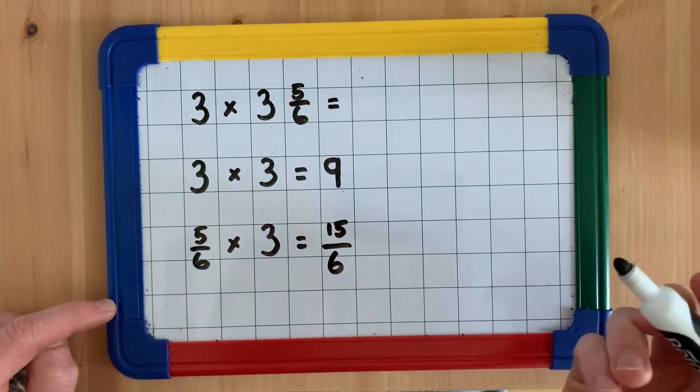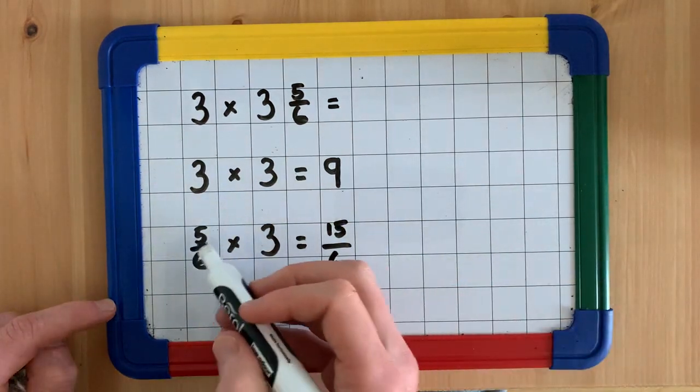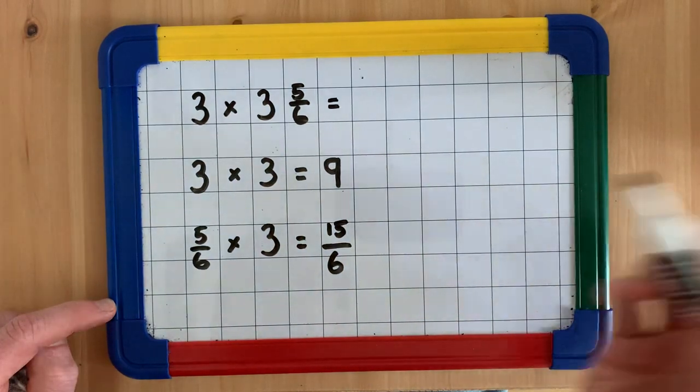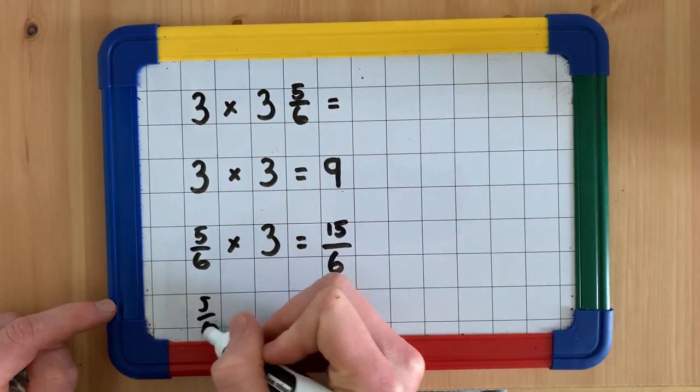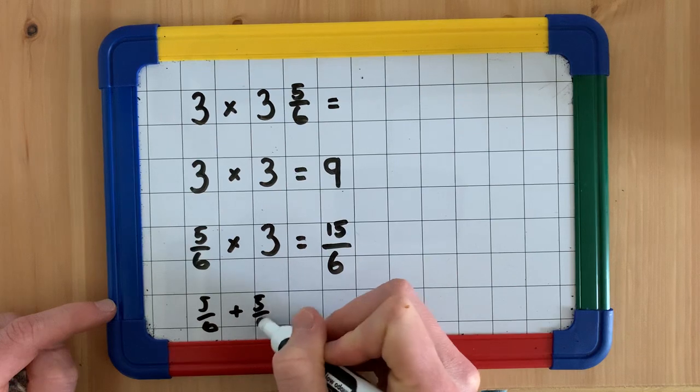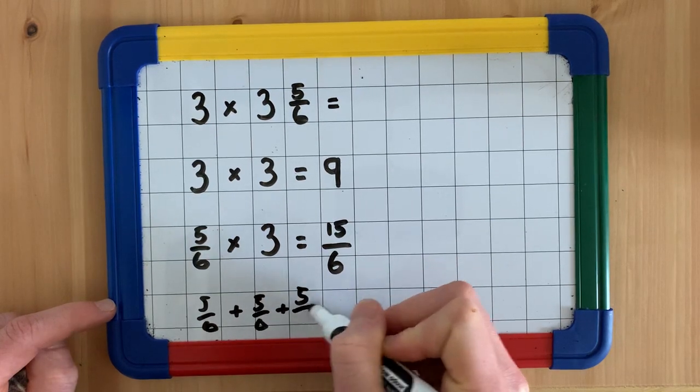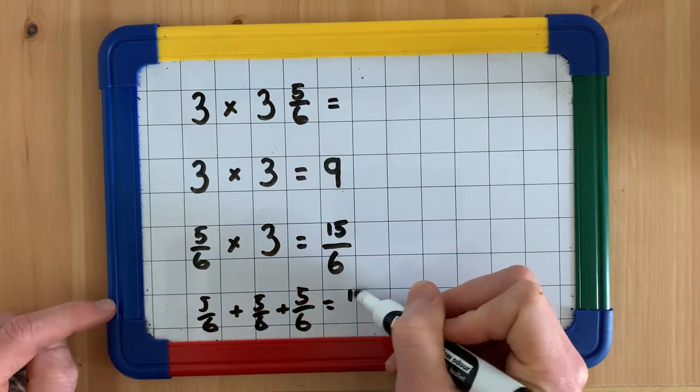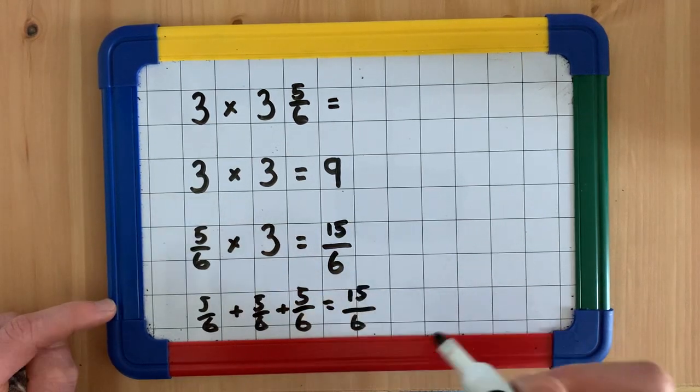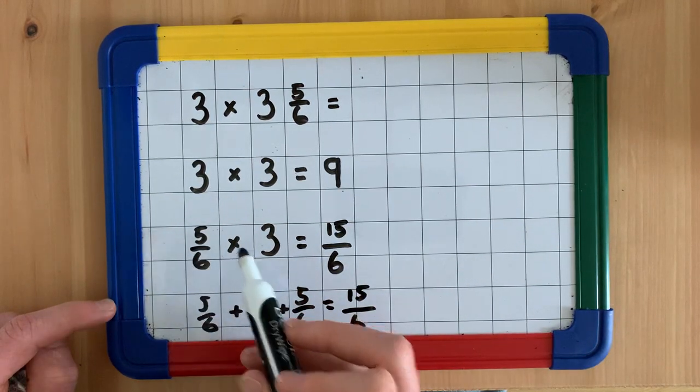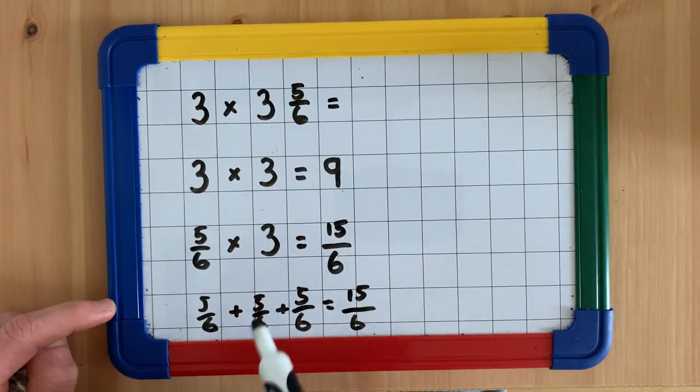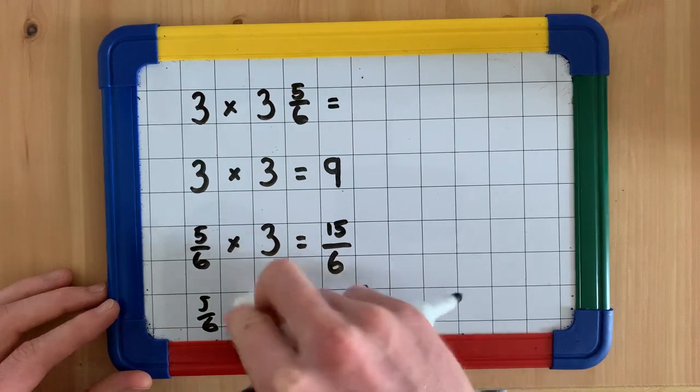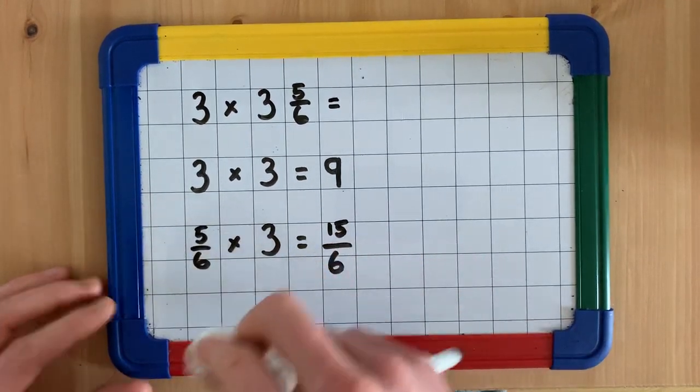5/6 times 3 is equivalent to 5/6 add 5/6 add 5/6 is repeated addition. So that's why 5/6 times 3 makes 15/6 because it's the same as repeated addition. We can also see this using bars.